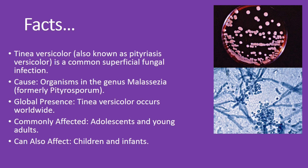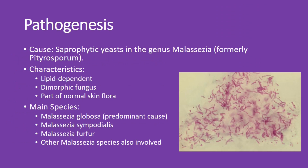If you or someone you know has discolored patches on their skin, this could very well be the reason. The cause is saprophytic yeasts in the genus Malassezia. These yeasts are lipid-dependent dimorphic fungi and are part of the normal skin flora. The main species include Malassezia globosa, which is the predominant cause, as well as Malassezia sympodialis and Malassezia furfur. Other species of Malassezia can also be involved.